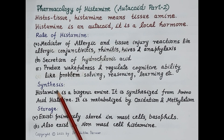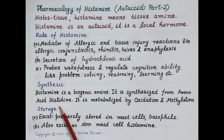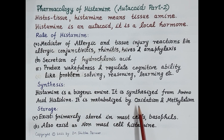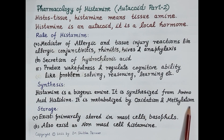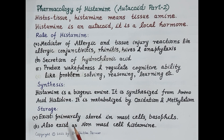Regarding the synthesis of histamine: histamine is a biogenic amine synthesized from the amino acid histidine. It is metabolized by the processes of oxidation and methylation. Histamine exists primarily stored in the mast cells and also in basophils, which are white blood cells.